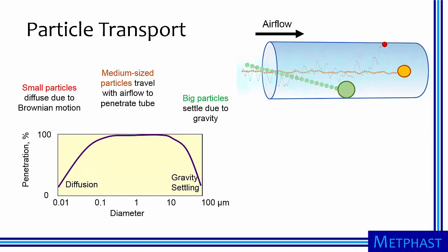So in this plot, a penetration of 100% means that all particles pass through the tube or are transported to the other side. And 0% means that all of the particles hit the walls of the tube and do not transport to the other side.